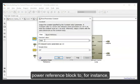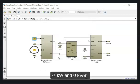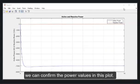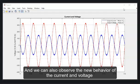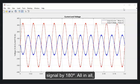If we change the defined values of active and reactive power in the dynamic power reference block to, for instance, minus 7 kW and 0 kVA reactive, we can confirm the power values in this plot. And we can also observe the new behavior of the current and voltage plot, where the current is now lagging the voltage signal by 180 degrees.